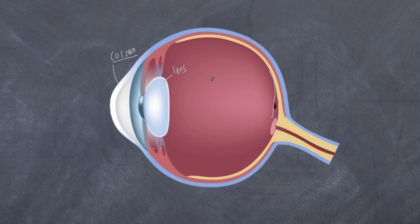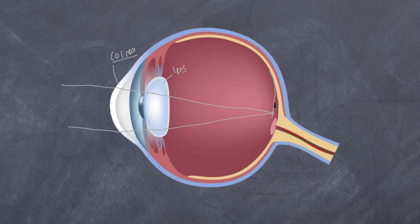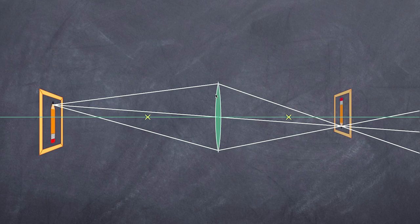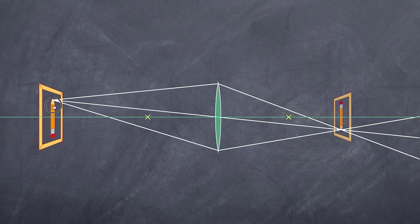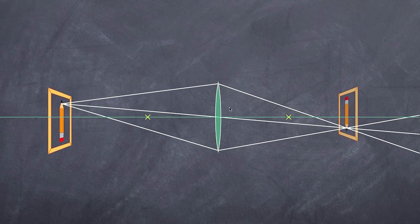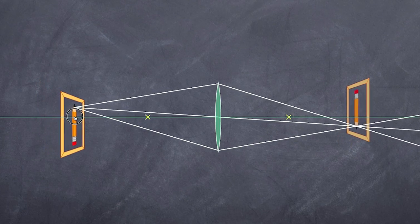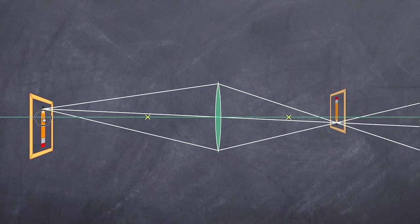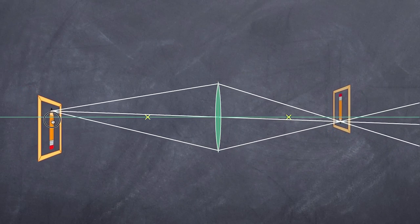In essence, light enters the cornea, bends, and the amount it bends is determined by all these factors, producing a real image at the back. Here is a well-known animation by PhET which I've used before to show how a real image is formed. If I have an object and move it, you can see that the position of the real image — what is in focus — changes as the object moves nearer or further away.